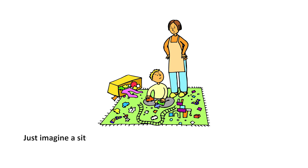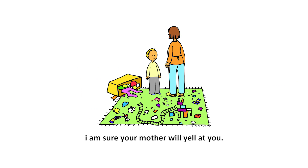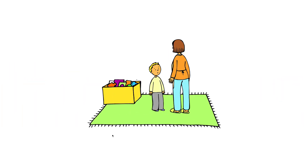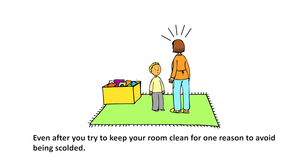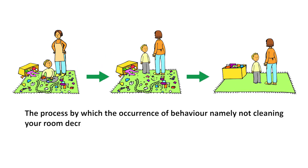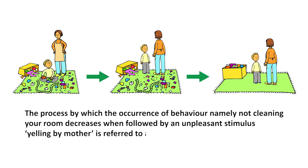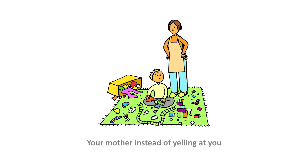Imagine a situation where you don't clean up your room when your parents ask you to — your mother will yell at you. What do you do? You clean up the room, and even after that you try to keep your room clean to avoid being scolded. The process by which the occurrence of a behavior — not cleaning your room — decreases when followed by an unpleasant stimulus — yelling by mother — is referred to as positive punishment.